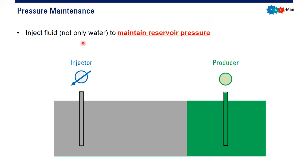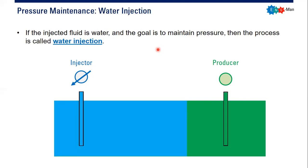We can inject any kind of fluid, not only water, into the reservoir to maintain reservoir pressure. In practice, many companies inject either gas or water. If we use water — if the injected fluid is water — and the goal is to maintain the reservoir pressure, then the process is now called water injection.